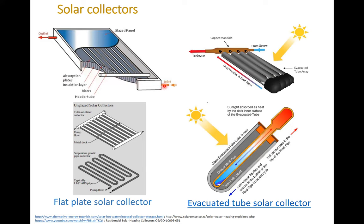The flat plate solar collector is a frame of metal or wood. Inside this frame, there is an absorber blade — mainly metal painted with black color. In the back of this absorber blade, there is an insulation layer to prevent heat losses from the back of the solar collector. And here there are some tubes — two big tubes, one at each end — and these are called the headers or header tubes.